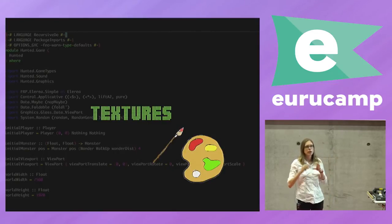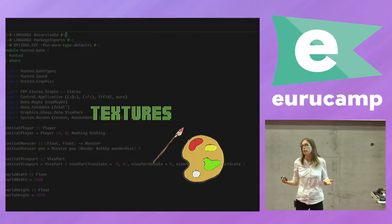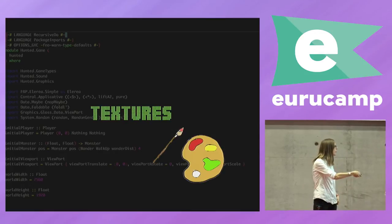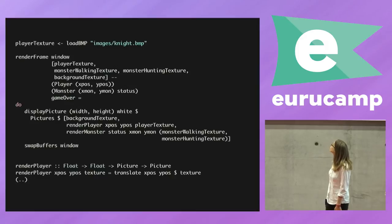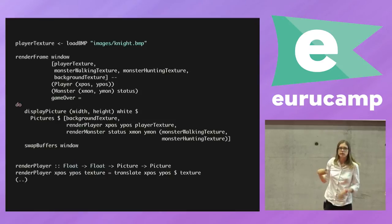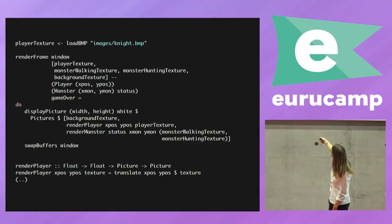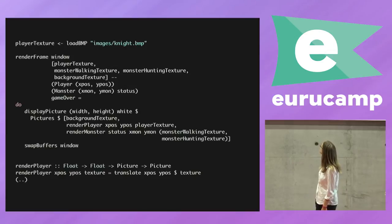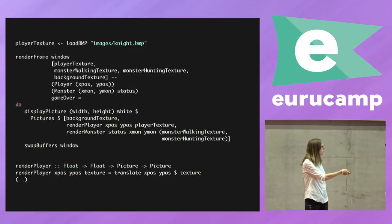What we did with Gloss before was drawing a little square or circle, but usually we want a spaceship or a landscape. So we want to work with images rather than geometry. Fortunately Gloss helps us again — we can just load a bitmap like this and call it a texture. Then we use that texture in our render frame function. For instance, to render the player, we take that texture we loaded and move it to wherever we need it to be.